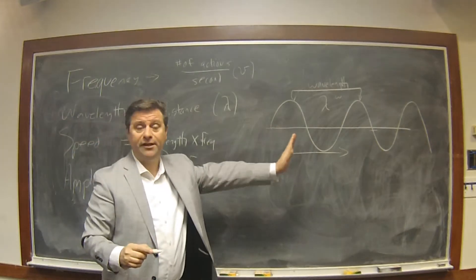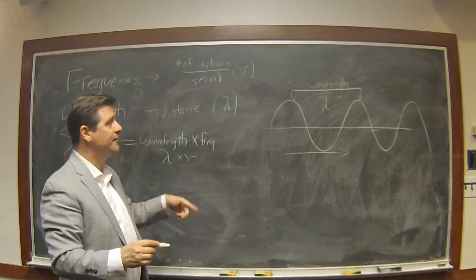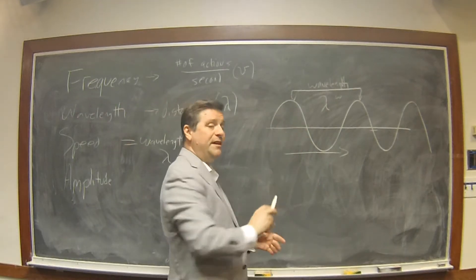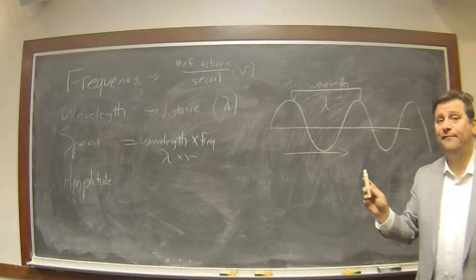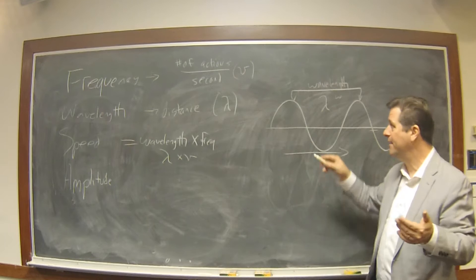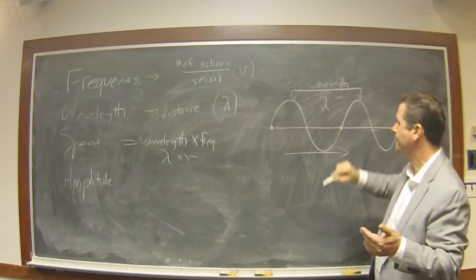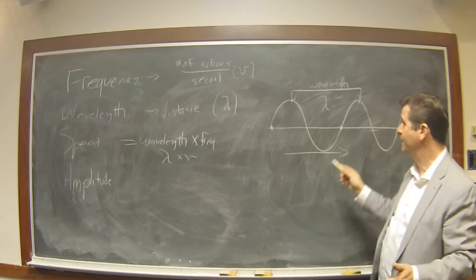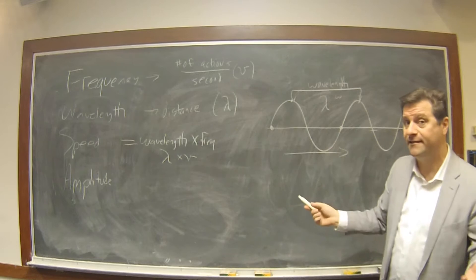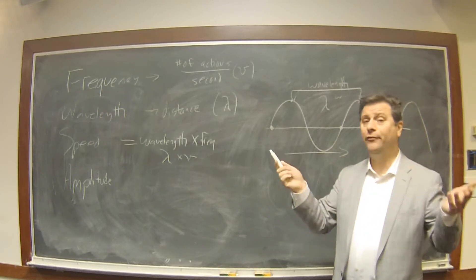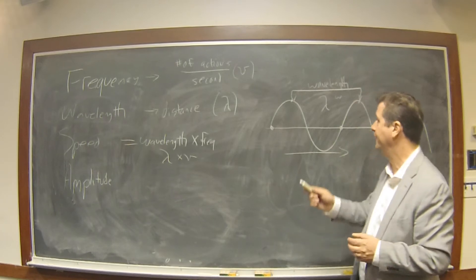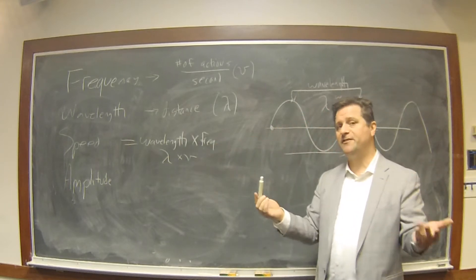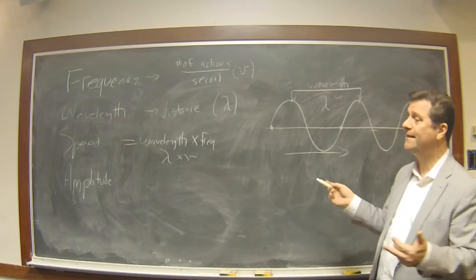The speed with which they're traveling is simply equal to the wavelength times the frequency, or lambda times nu. So we could say, what's the wavelength? One meter. What's the frequency? One cycle per second. What do we mean by frequency in this diagram? The wavelength says, what is the distance between peaks? And the frequency says, how often per second the whole cycle occurs.